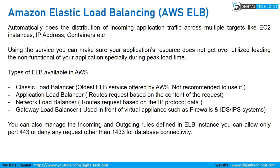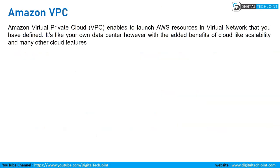Then we have Elastic Load Balancing — ELB. There are four types: classic load balancer (a very old service, not recommended), application load balancer, network load balancer, and gateway load balancer. ELB distributes incoming application traffic across multiple targets like EC2 instances, IP addresses, and containers, ensuring your application resources do not get over-utilized, especially during peak load time.